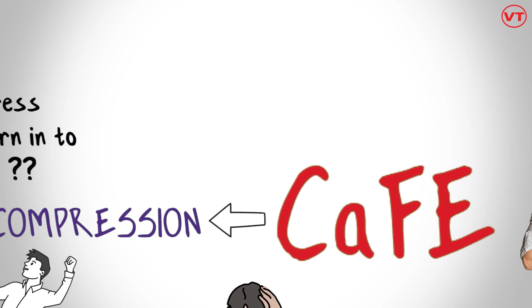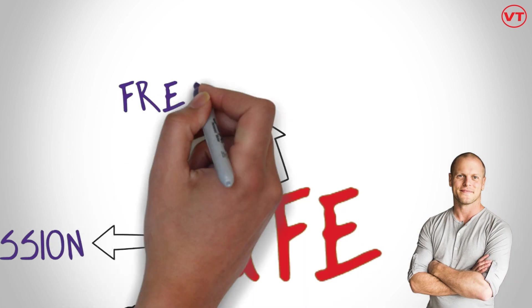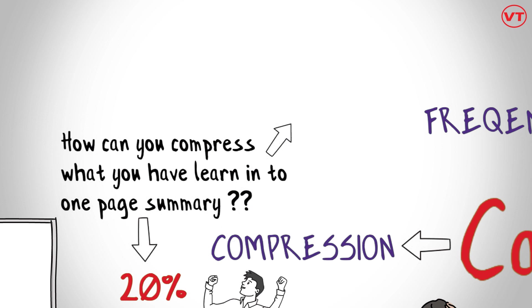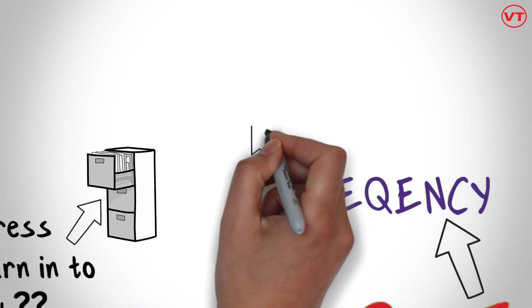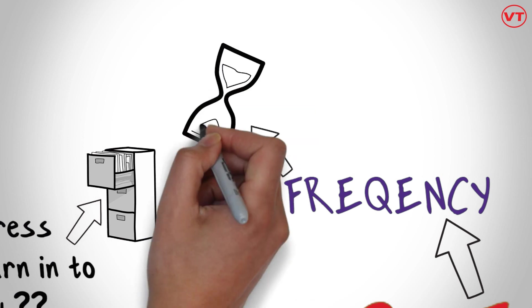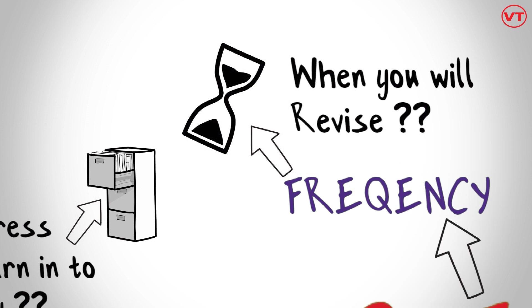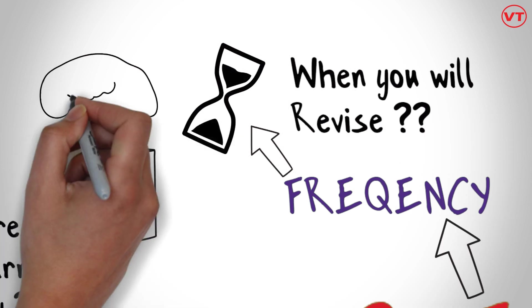The next step F stands for frequency. Once you prepared the compressed page summary, then keeping it in a drawer for a long time will not help. You need to decide the frequency in which you will revise your one page summary. This will help you to move the information slowly into your long term memory.